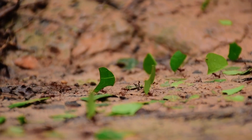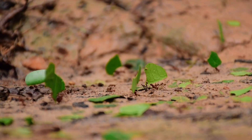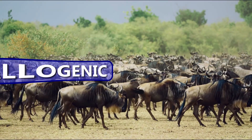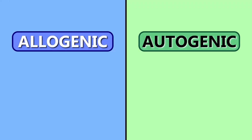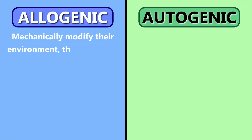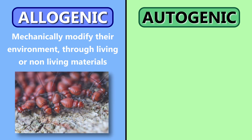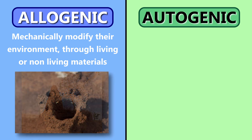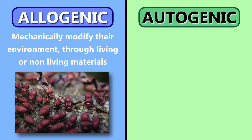There are two forms of ecosystem engineers. Let's briefly understand the difference between allogenic and autogenic ecosystem engineers. Allogenic engineers are those that mechanically modify their environment through living or non-living materials. Although sometimes considered as pests, think of termites — they build intricate mounds while moving large quantities of soil, modifying its texture and content, and additionally helping to maintain soil health through nutrient cycling and aerating the ground.